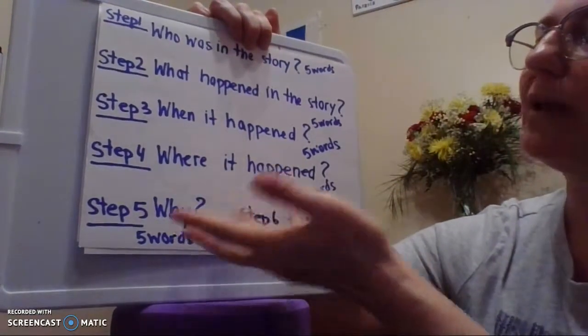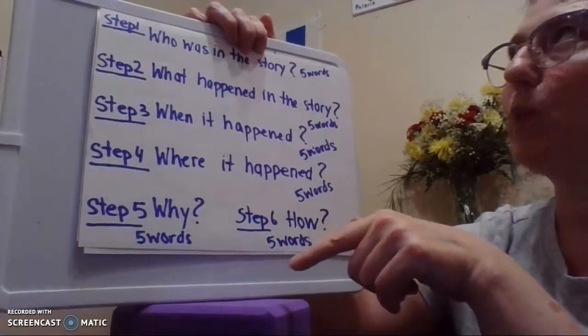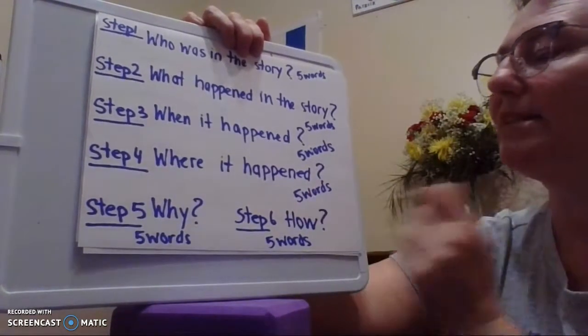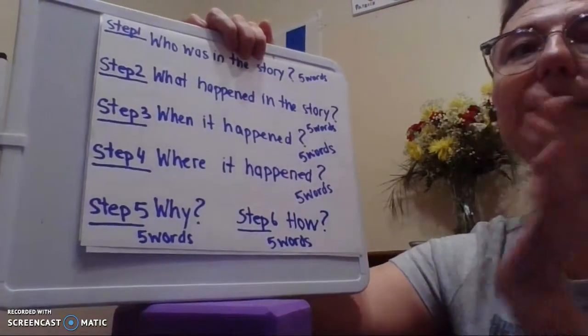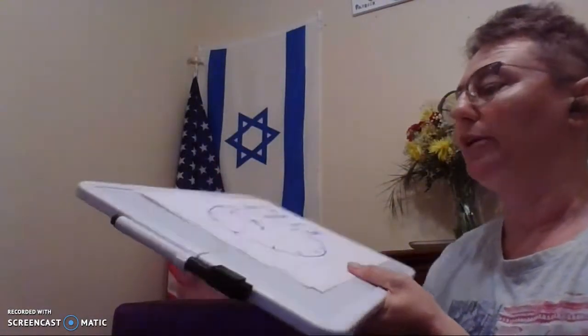Step five: write why it happened in five words or less. That one's going to be tricky. It'll probably take you all five words. Step six: write how it happened in five words or less. Again, that's one that'll probably take your five words.